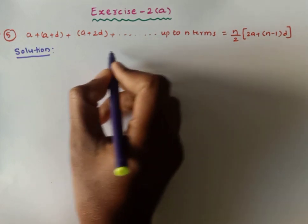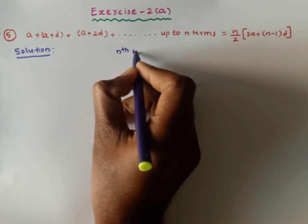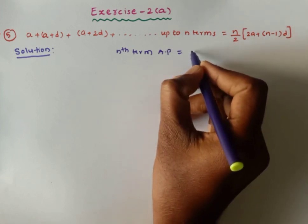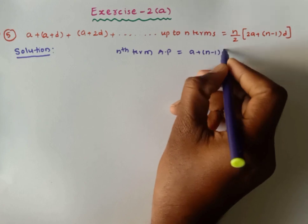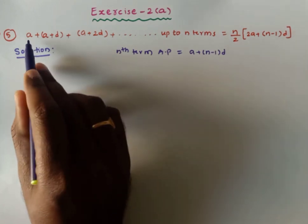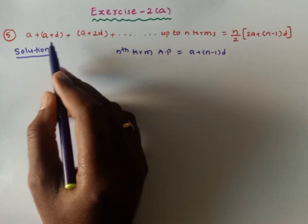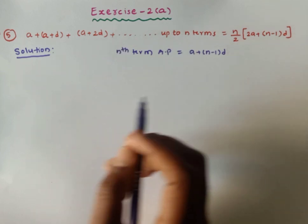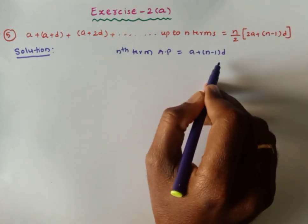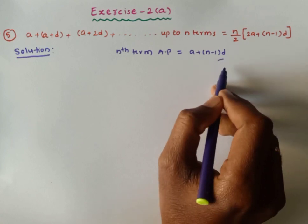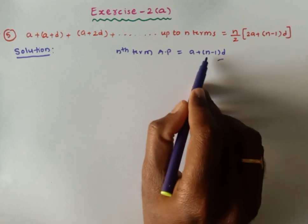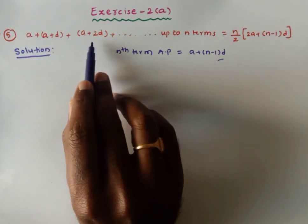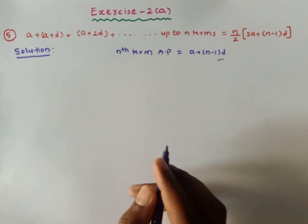The nth term of arithmetic progression is a + (n−1)d, where a is the first term of the series and d is the common difference. If we check the difference between any two consecutive numbers in the arithmetic sequence, that will be a constant value — it is called d, the common difference. By putting n=1 we get the first term, n=2 gives the second term, n=3 gives the third term, and so on. This is the nth term of the given series.